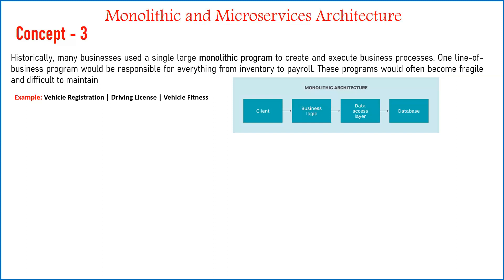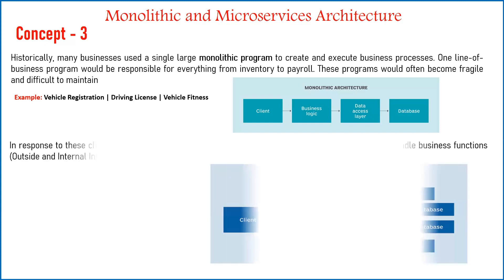For example, in a transport department you have a vehicle registration department, a driving license department, and a vehicle fitness department — all independent of each other. If there is a problem with vehicle registration, driving license and vehicle fitness can run easily. But with a monolithic application, if we needed to change the registration module, we had to bring down the complete system, causing unnecessary outage for the driving license and vehicle fitness applications.